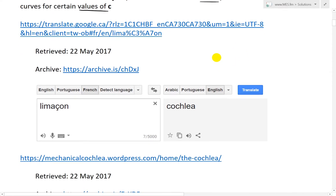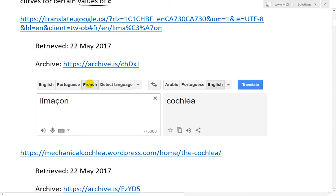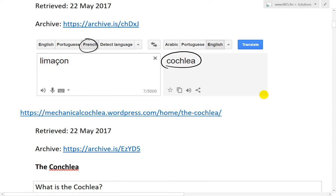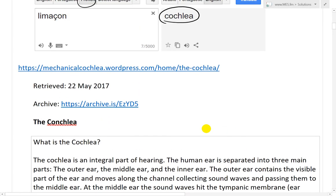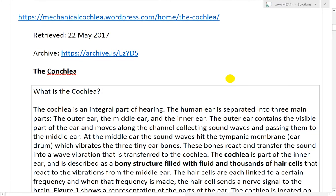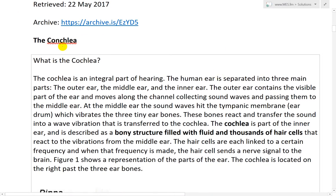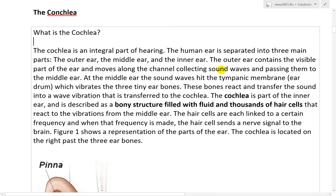So then I went up on Google Translate, translated so Limaçon goes French to English, Cochlia. So then I searched up what Cochlia was and this is from this website, this random website that I believe did a project on Cochlea. So the Cochlea, what is the Cochlea? The Cochlea is an integral part of hearing. The human ear is separated into three main parts the outer ear, the middle ear and the inner ear.